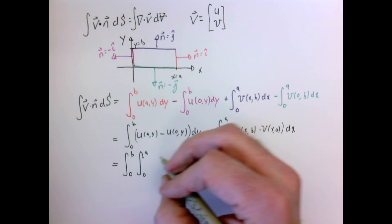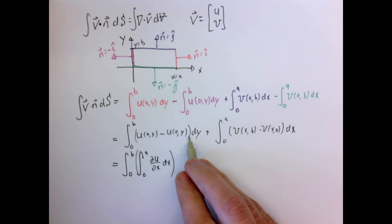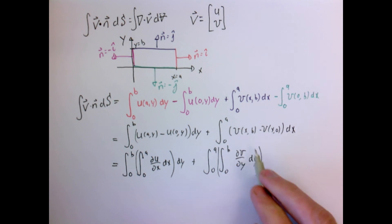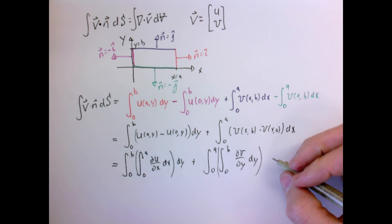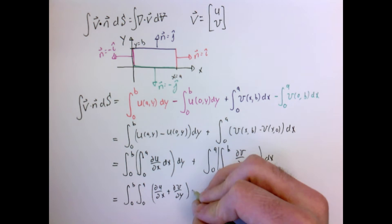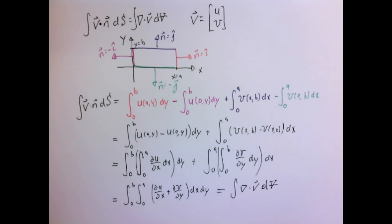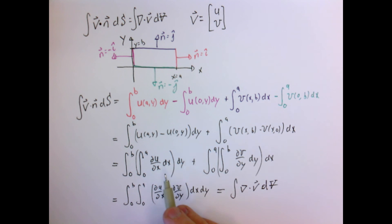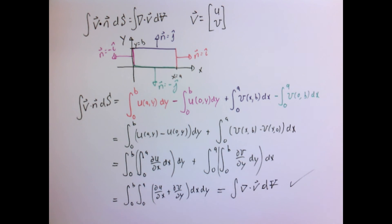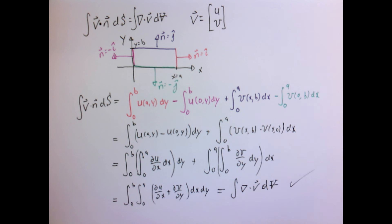Now I have u at x equals a minus u at x equals 0, and v at y equals b minus v at y equals 0. By the fundamental theorem of calculus, each of those differences in parentheses is equivalent to the respective integral of the partial derivative. I can combine these two terms together since order of integration doesn't matter — dy dx and dx dy — and that's exactly the divergence of the function integrated over the volume. Even though these are limited two-dimensional proofs with a square, they turn out to be true in general.